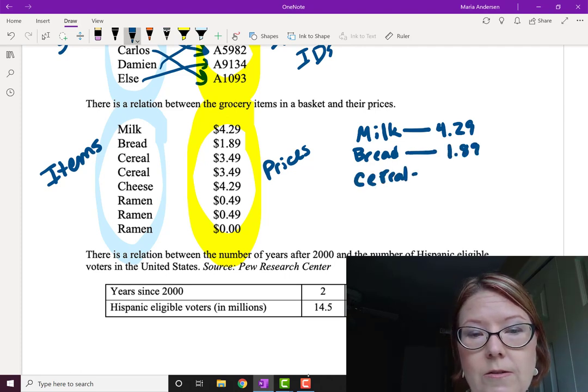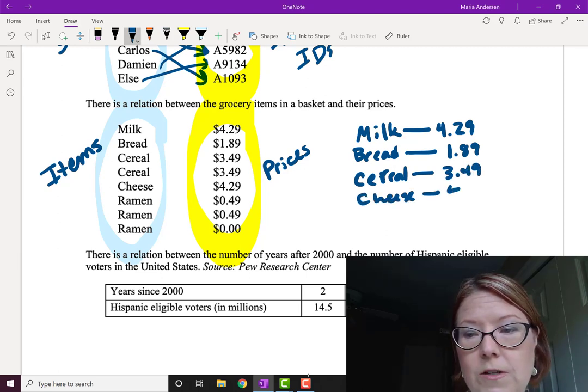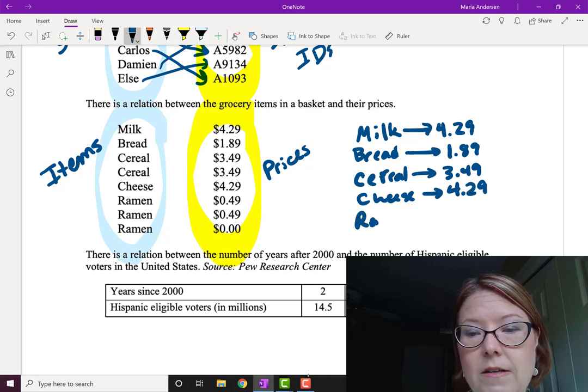Cereal for $3.49, cheese for $4.29, and finally ramen, which actually has two prices.